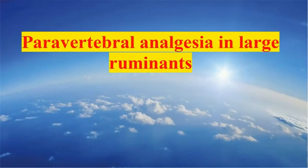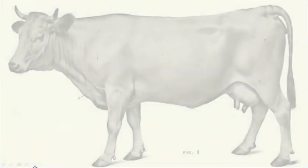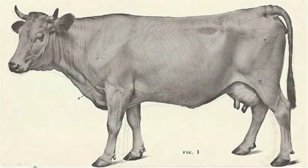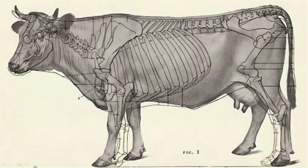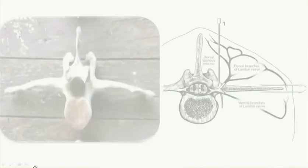Hello everybody. Today we will talk about the technique of paravertebral analgesia in large ruminants. This technique can simply produce complete uniform analgesia of the flank wall till the umbilicus.